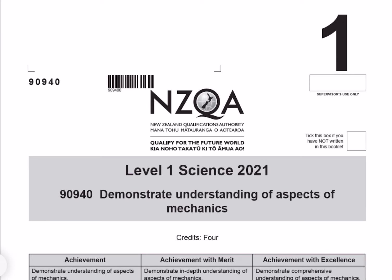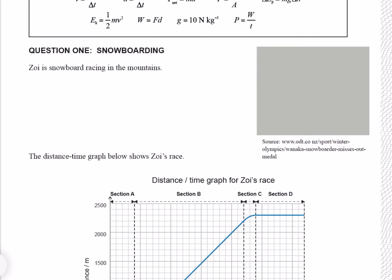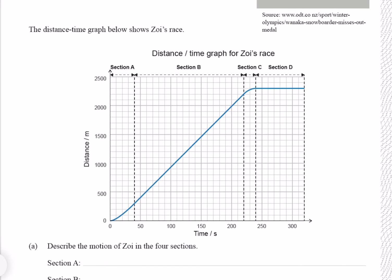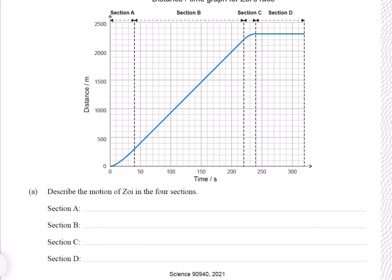In this video we'll be going through the 2021 Level 1 Mechanics paper. Question 1: Zoe is snowboard racing in the mountains. The distance-time graph below shows Zoe's race. Describe the motion of Zoe in the four sections.